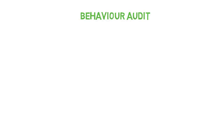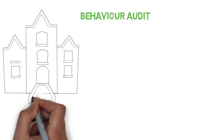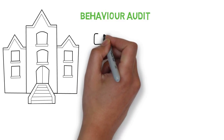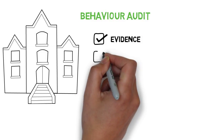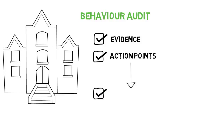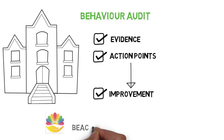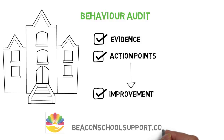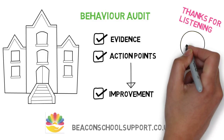So that's our behaviour audit — a top-to-toe investigation of behaviour at your school, which gives you unbiased evidence to inform your future decision-making and a set of action points that will lead to improvement. If you would like us to carry out a behaviour audit at your school, or you have any questions at all, get in touch with us through the website. You can find our details on the contact page. My name's Simon, I'm from Beacon School Support, and thanks for listening.